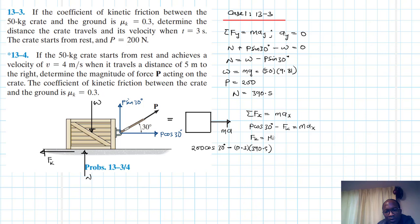Because we know that our f k is equal to mu k times N. So this is just going to be equal to m which is the mass times a x. Therefore our a x: we have 200 cos 13 minus 0.3 times 390.5 divided by 50, so we have 1.1211 meters per second squared.